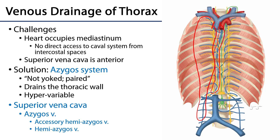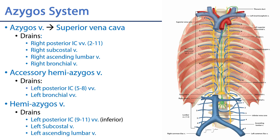On the left side we have an accessory hemiazygous vein which drains the region I have circled — the accessory hemiazygous, or AHA vein — and then we have the hemiazygous vein, which is going to drain the inferior portions of the thorax as well as the lumbar regions. I always recall that accessory is superior because 'A' comes before 'H' in the alphabet.